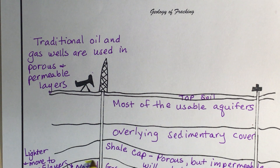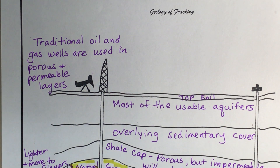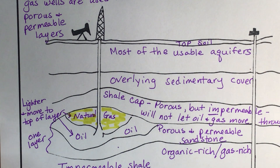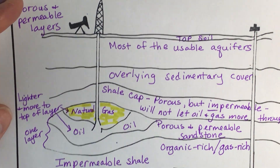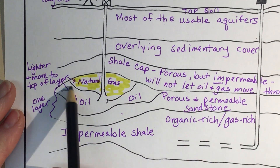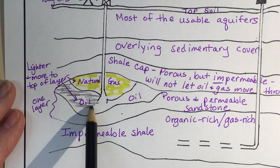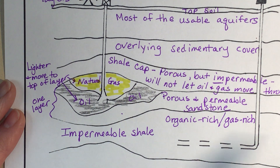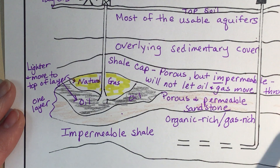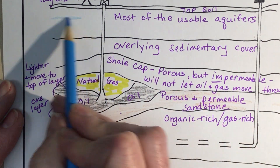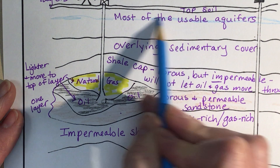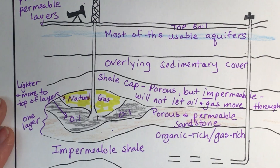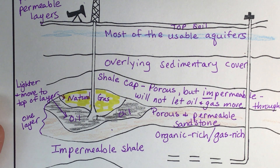Using colors helps you memorize the diagram better. We can color natural gas yellow — it's not necessarily yellow, usually it's clear. Oil is black, so we color that layer black. The sandstone is a light gray. And our aquifers are up near the surface — most of them, not all.